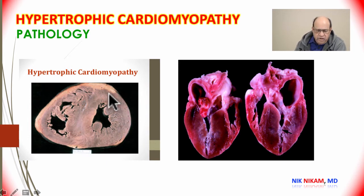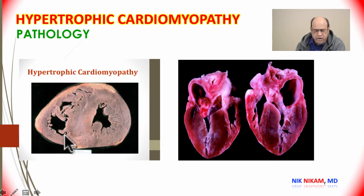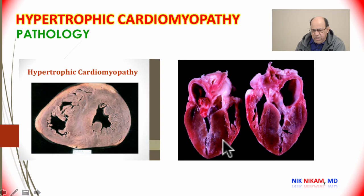This patient also shows significant mitral regurgitation secondary to left ventricular outflow tract obstruction and hypertrophic cardiomyopathy. Here are pathological specimens showing concentric hypertrophy of the left ventricle with thickening of the papillary muscles, thickening of the septum on both sides, and some hypertrophy of the right ventricular musculature. A sagittal section shows concentric hypertrophy with a significantly diminished left ventricular cavity.